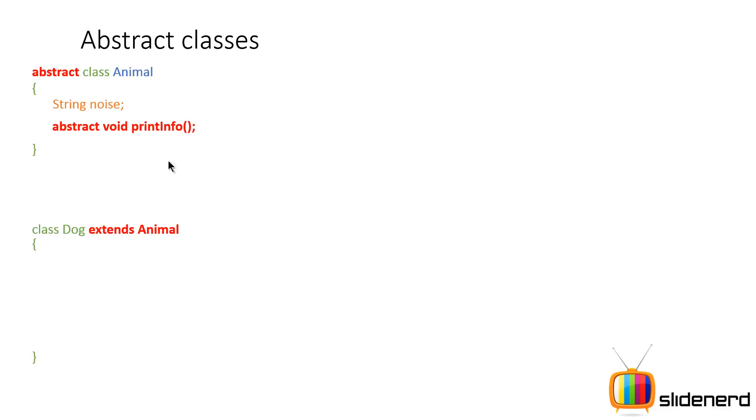no closing parentheses and no code inside that method. But I have simply returned this word abstract to indicate that this method printInfo is incomplete.